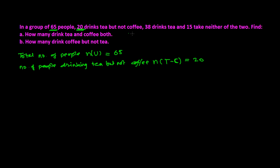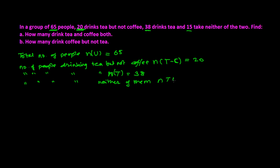38 people drink tea, so the total number of people drinking tea — the cardinality of T — is 38. Out of those 38, some people are also drinking coffee, but 20 are just taking tea. The next piece of information: 15 take neither of the two, meaning neither coffee nor tea. To represent this, I take the complement of T union C — those people not taking tea and not taking coffee — and that is 15.